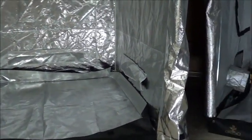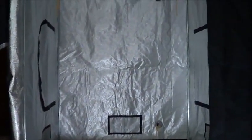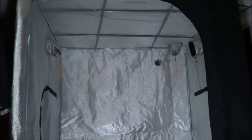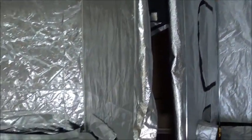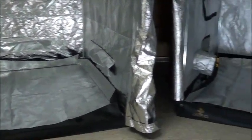Basically a grow tent is a space that's easy to set up and take down and comes with vent holes, bars to hang lights, reflective walls, and a spill safe floor. Pretty basic stuff, right?